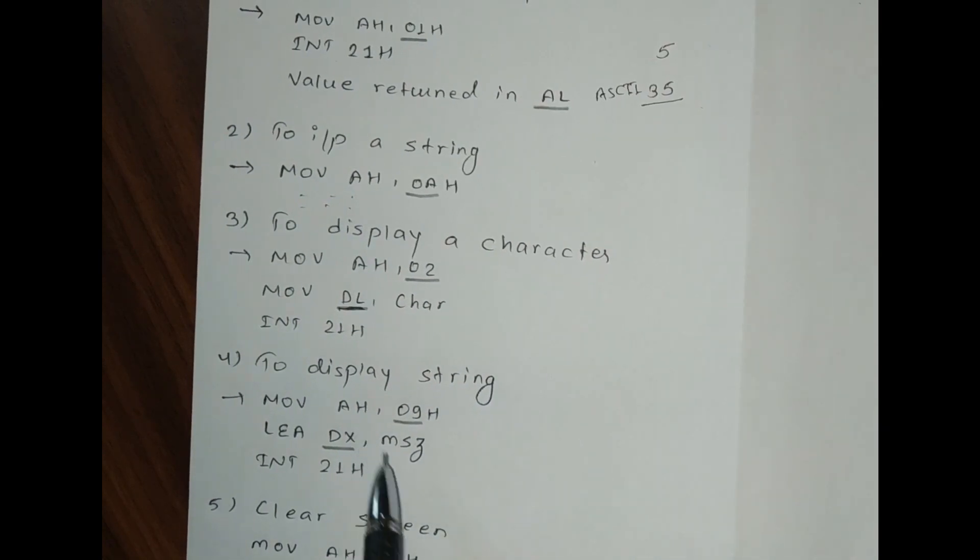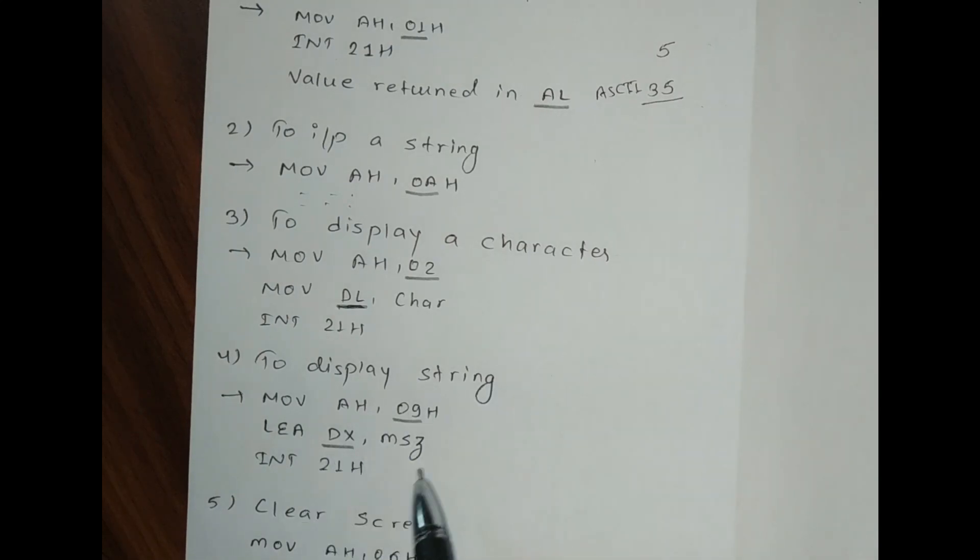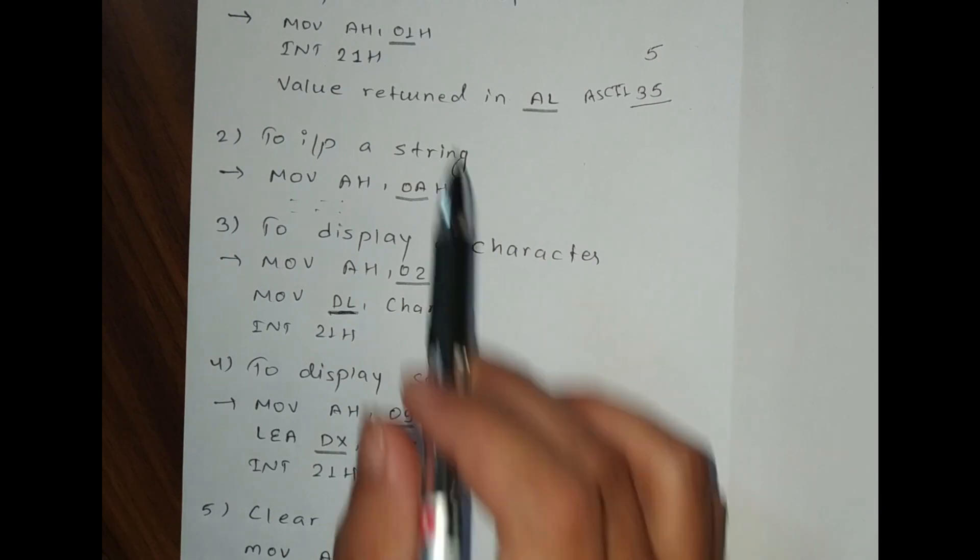To display a string, you have to put 09H in the AH register and the string present in the DX register will be printed on the screen or displayed on the screen.